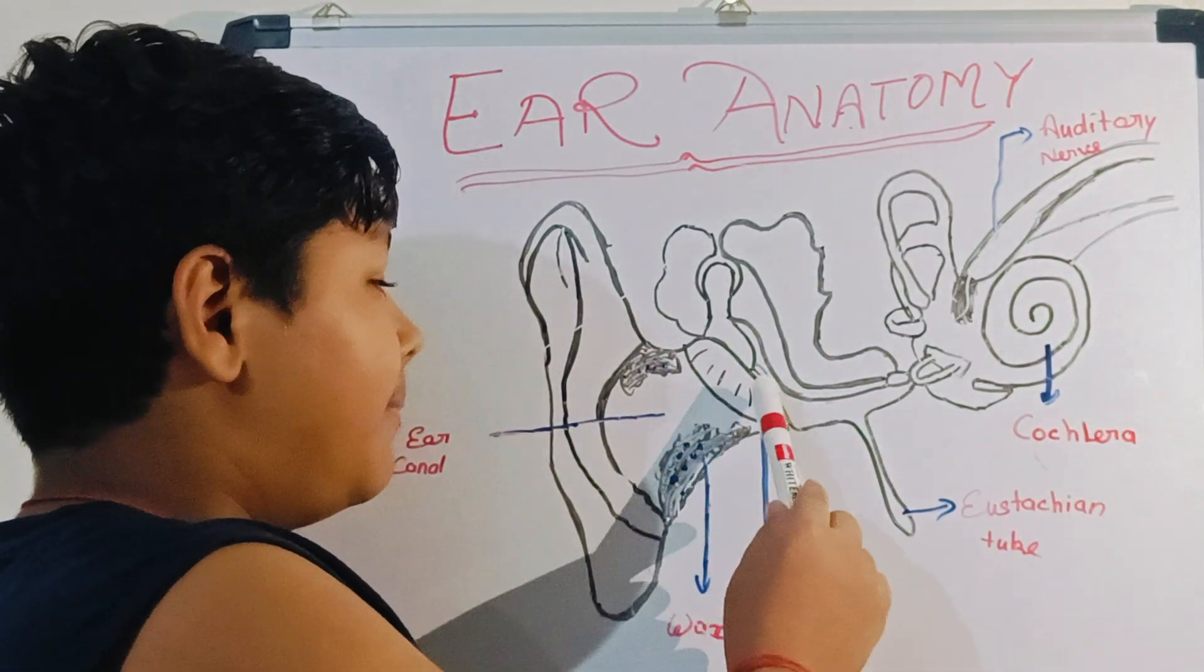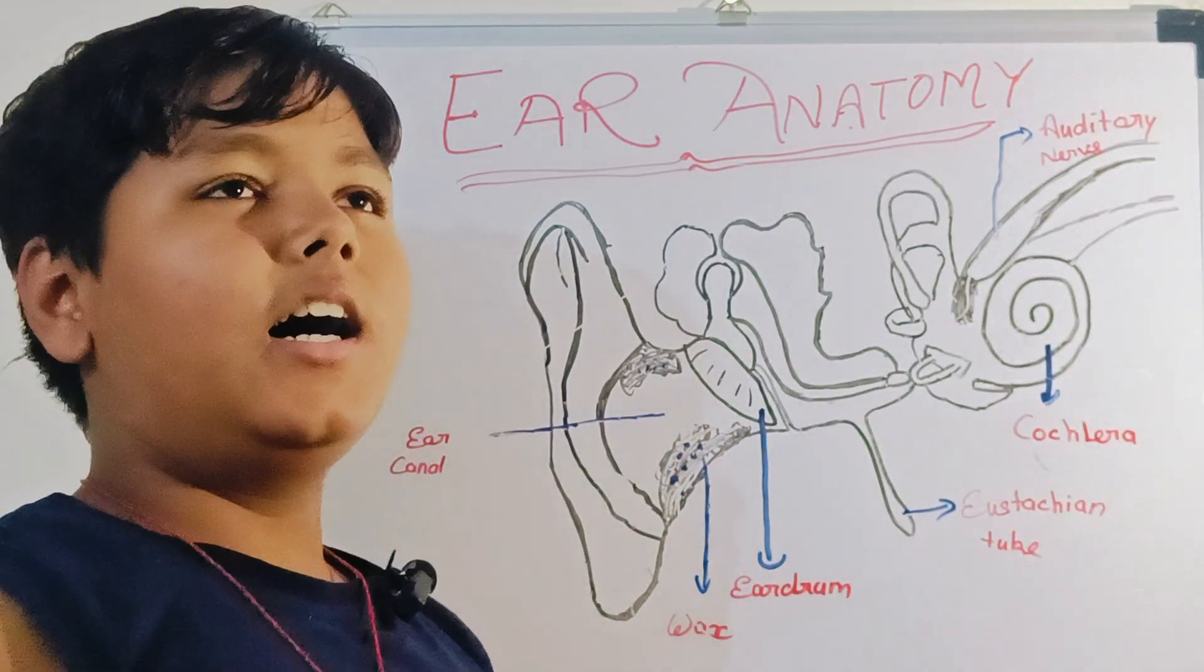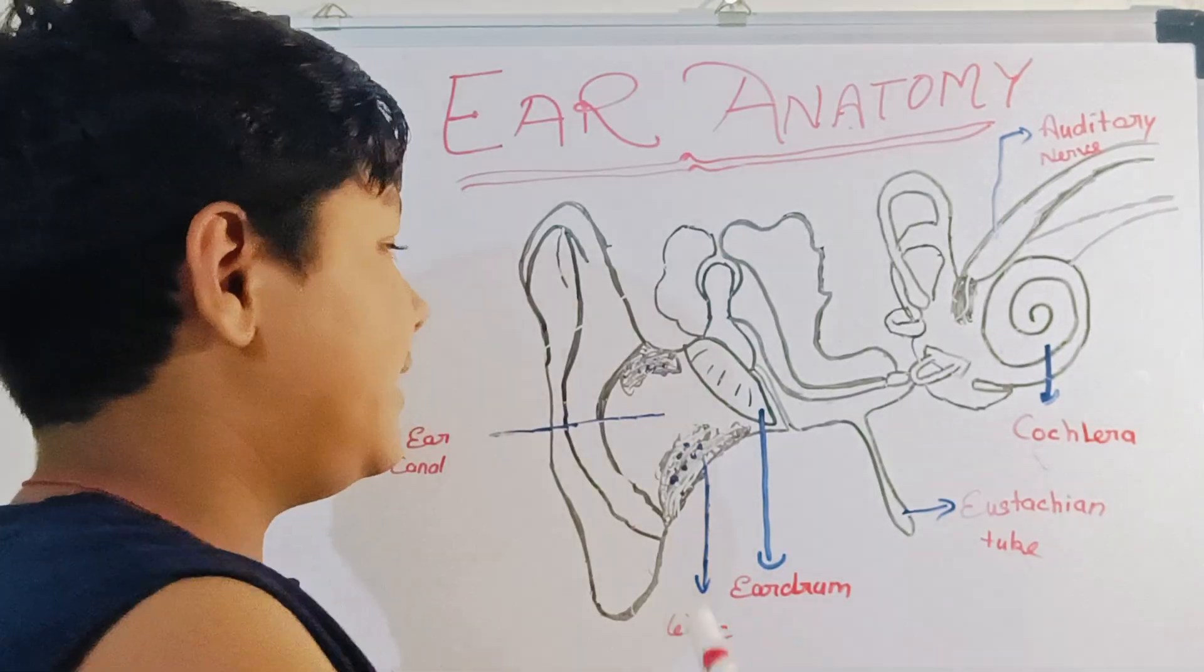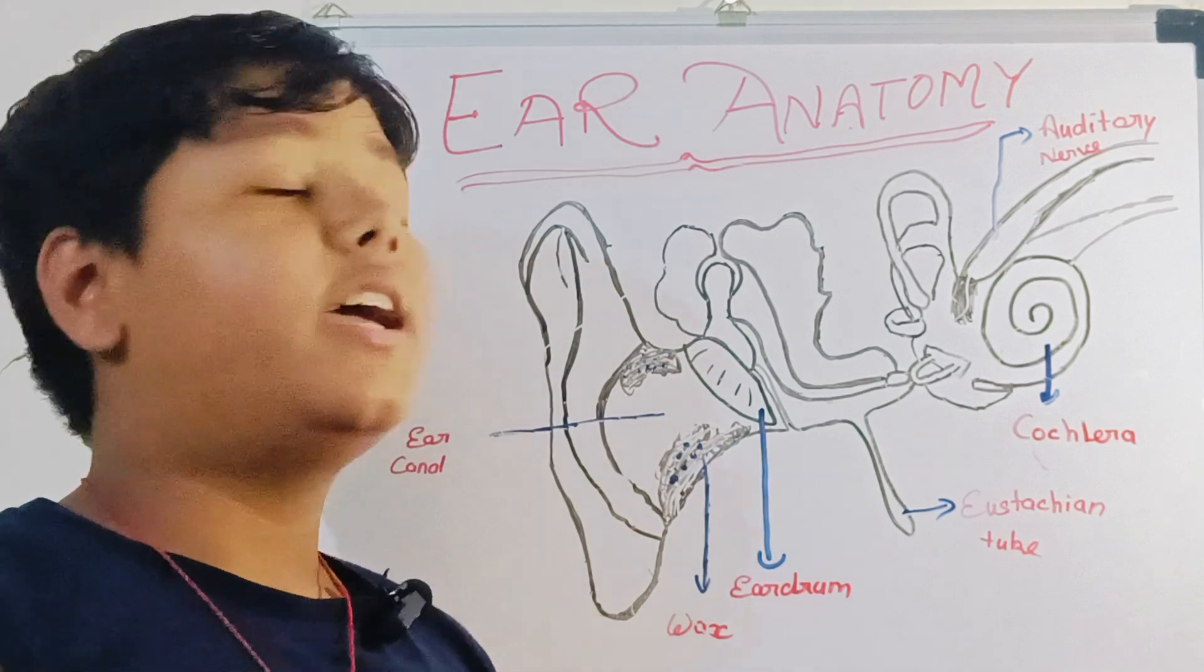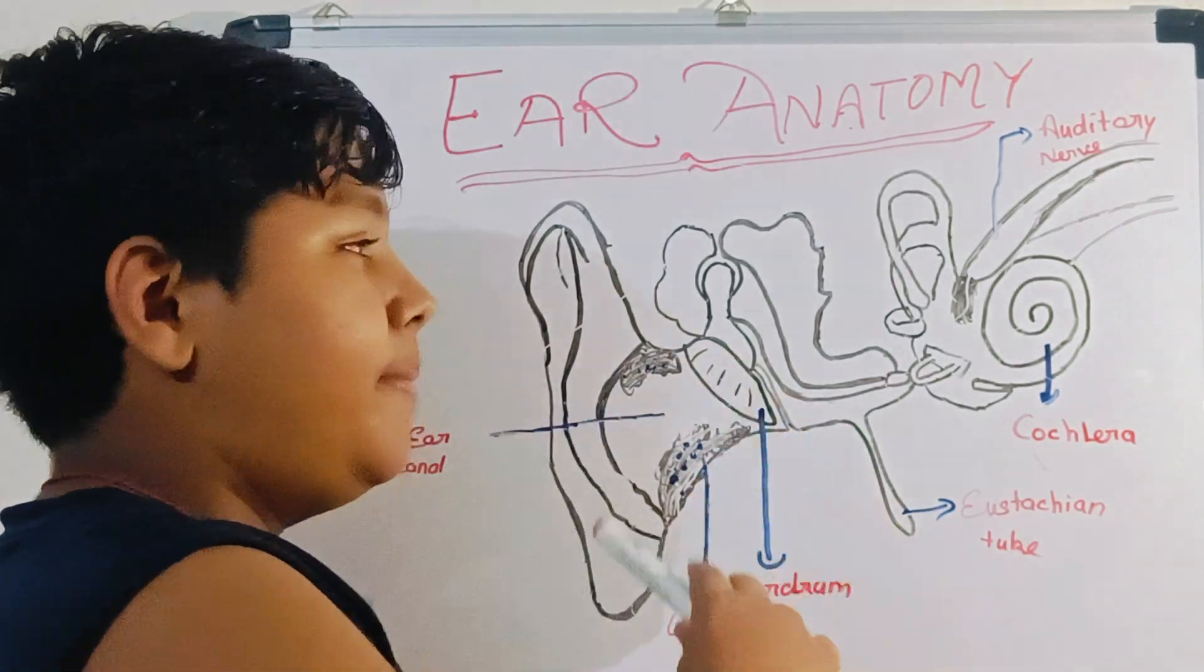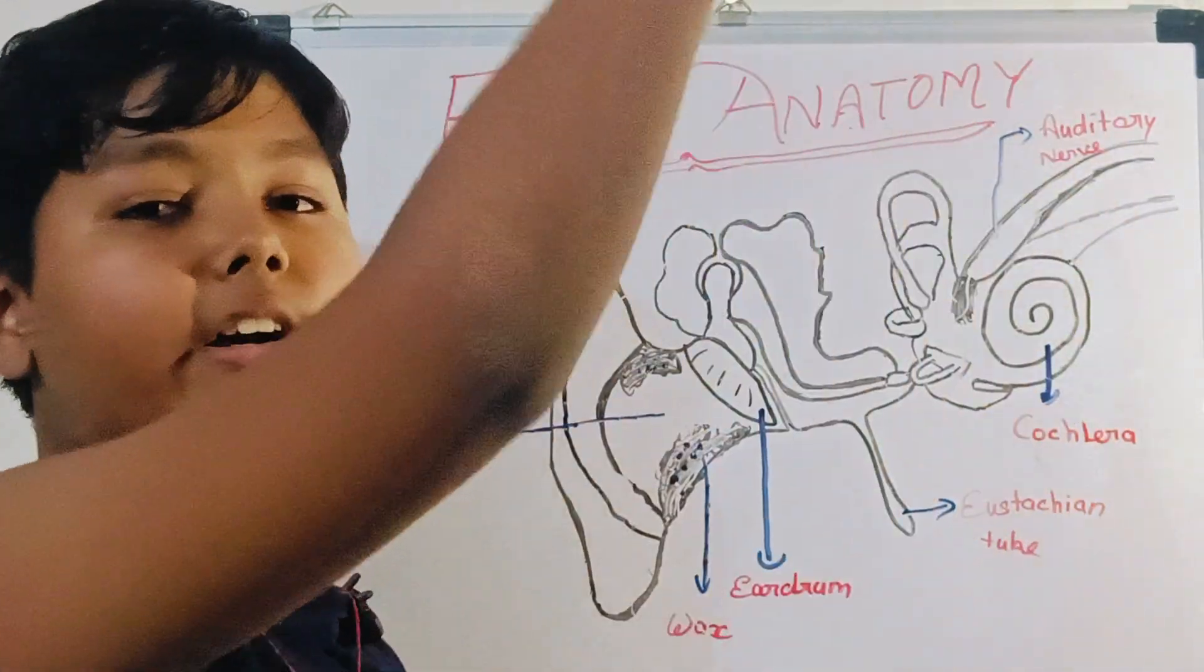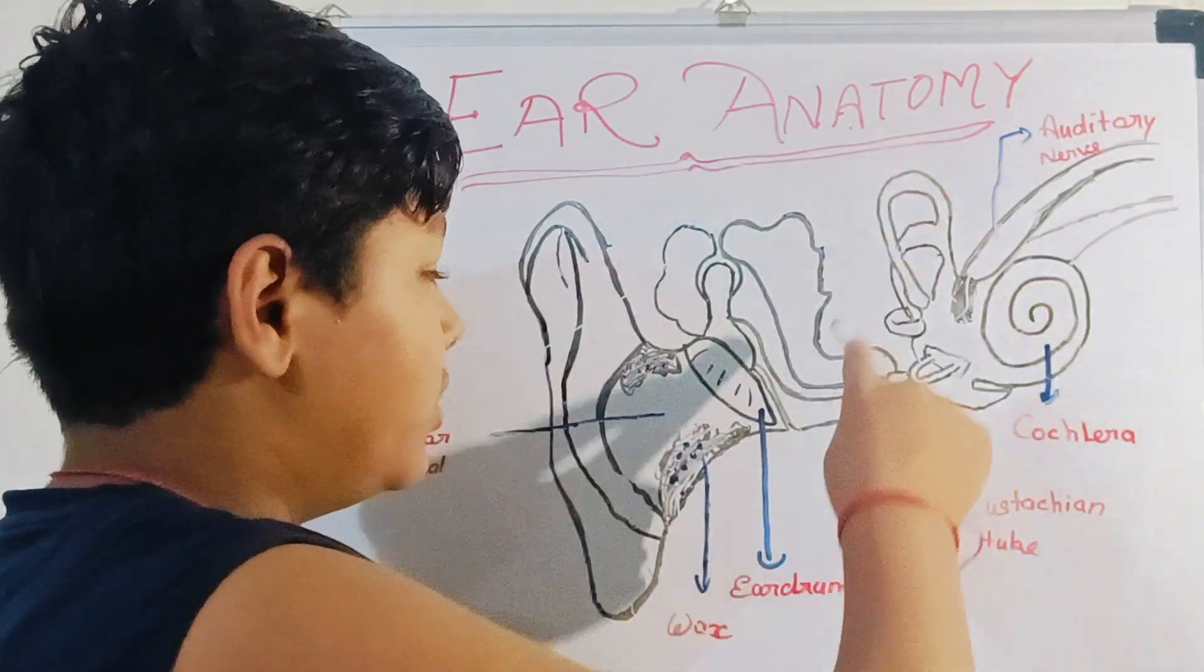So after that, the second part is the eardrum. You have heard elders say 'kaan ke parde' - that's the same as eardrum. The eardrum vibrates to produce sound, and through this it goes to the electroconverter and then to the brain.